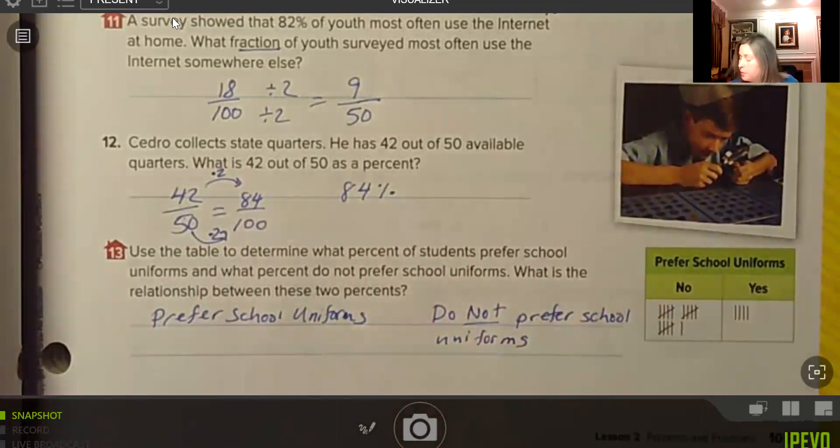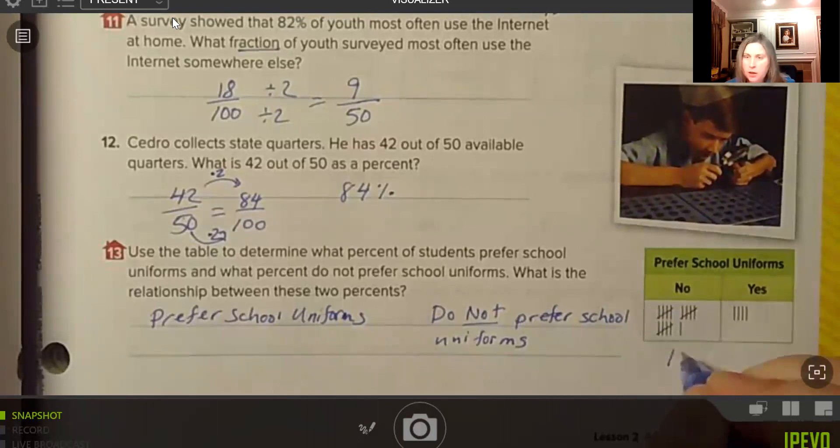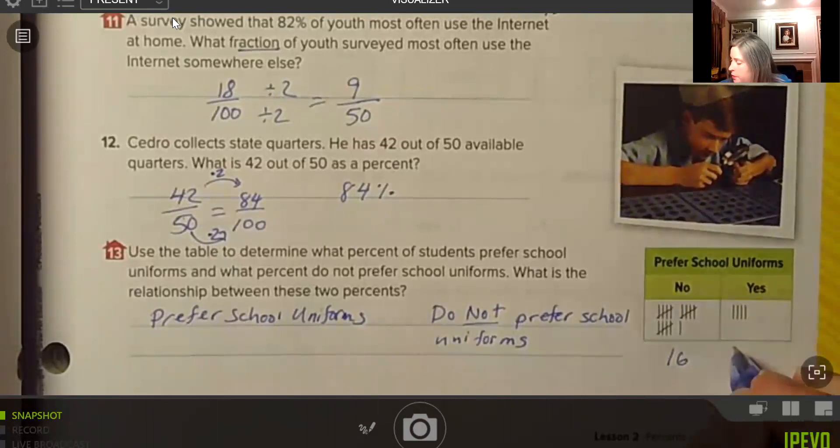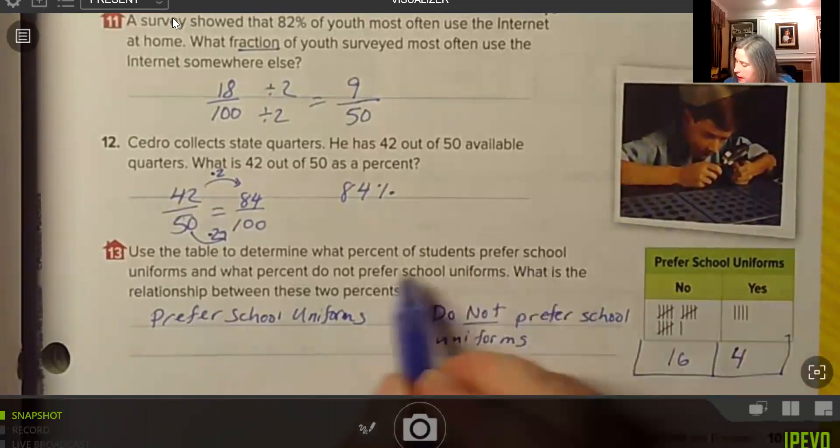So when we look at our numbers over here, so we have in the no column, we have tally sets 5, 10, 15, 16. And then the yes category, students who do prefer school uniforms, that's four. So altogether, there are 20 students in the survey.